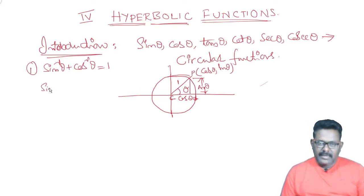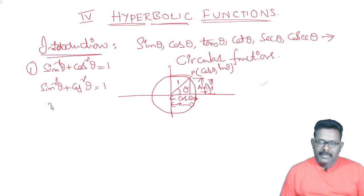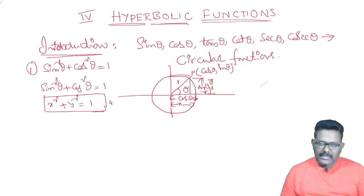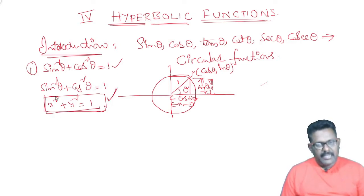Sin squared theta plus cos squared theta equals 1. The x-coordinate is cos theta and the y-coordinate is sin theta, so x squared plus y squared equals 1. This is the equation of a circle. The trigonometric identity represents one circle.